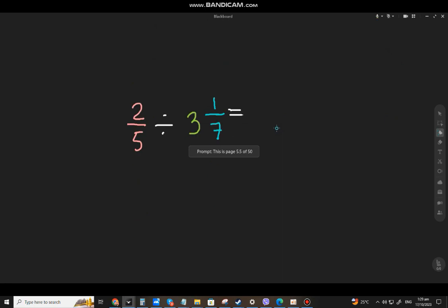Let's have the final example. What if we have the proper fraction as a dividend and the divisor will be a mixed number. So as usual, for mixed numbers, you have to change it first to an improper fraction. So 7 times 3, that will be 21. Plus 1, that will be 22. And copy the denominator.